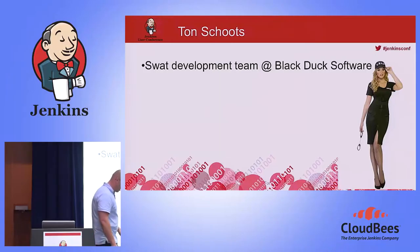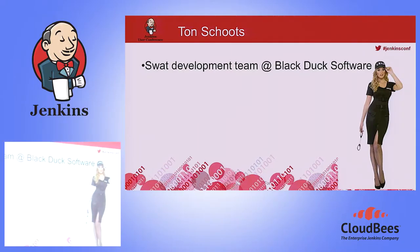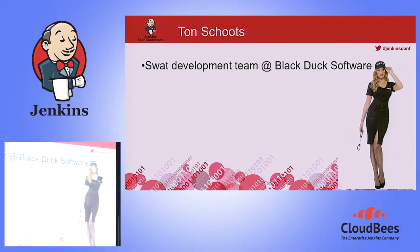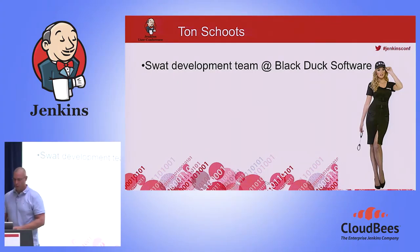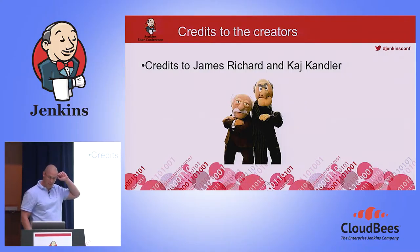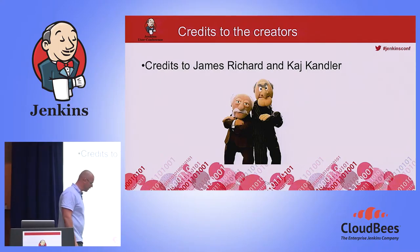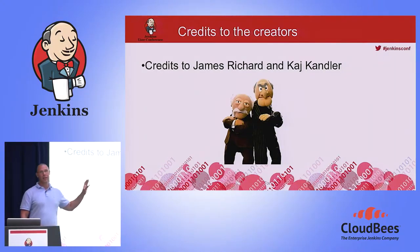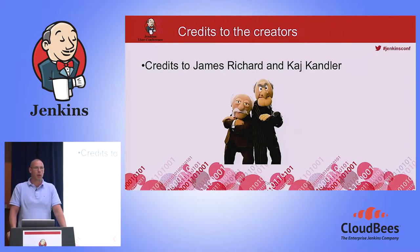My name is Ton Schott. I'm part of the SWAP team, and I think you can catch why. The SWAP team within Black Duck is basically an engineering team responsible for solving all kinds of problems on short notice. James Richard and my colleague Kay Kendler actually created this plugin for Jenkins that I'm going to present to you, along with all the plugins that we have.